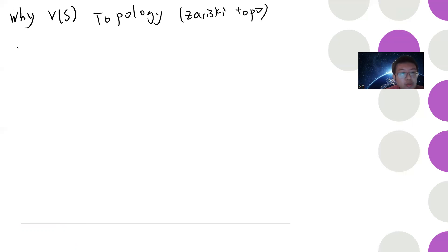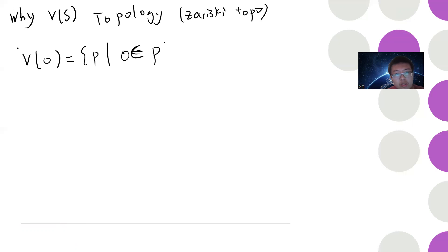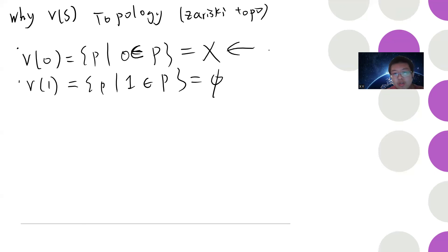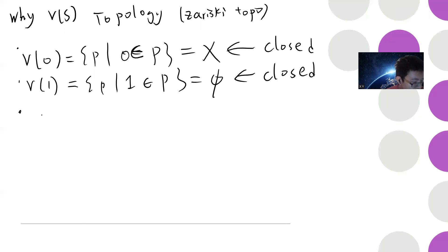Let's quickly verify this is a topology. V(0) is all the prime ideals which contain zero — since every ideal contains zero, V(0) is the whole space X. V(1) is all prime ideals containing 1, but by definition no ideal can contain 1 (otherwise that ideal would be the whole ring), so V(1) is empty. This shows the whole space is closed and the empty set is closed, satisfying two requirements of a topology.